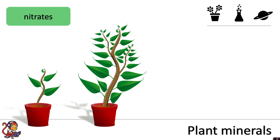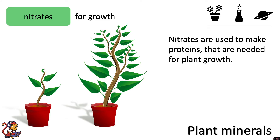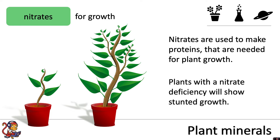Let's look at some key minerals. First off we'll look at nitrates. Nitrates are needed for growth because they are used to make proteins, and these are needed for plant growth. Plants with a nitrate deficiency will show stunted growth. Of the two plants shown, the one on the left is not growing properly — it's much shorter than it should be. That's why we describe it as having stunted growth, so it could be that that plant is suffering from a nitrate deficiency.